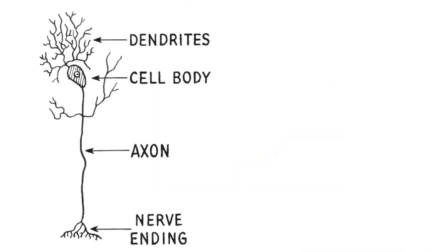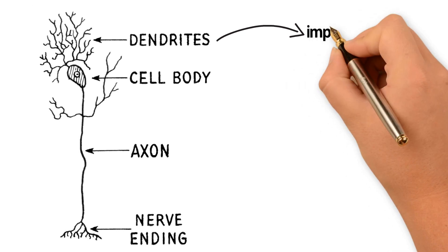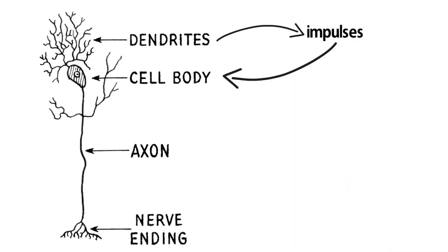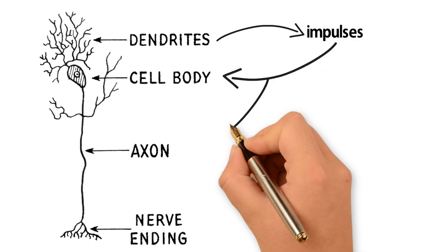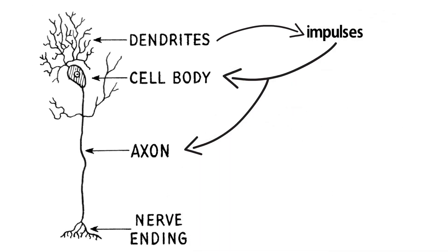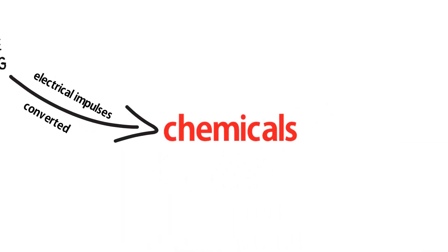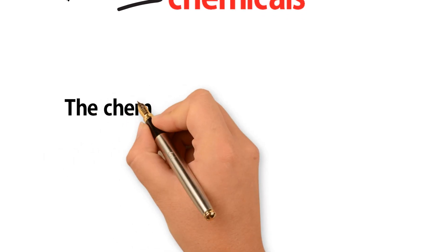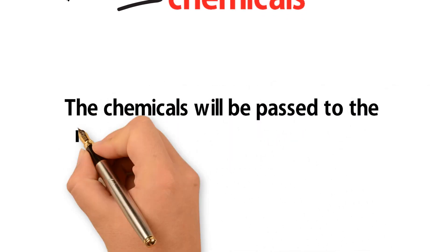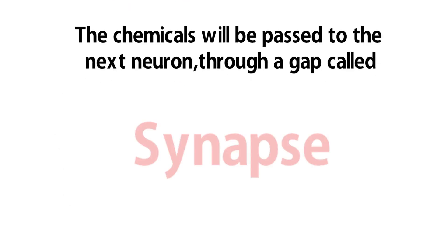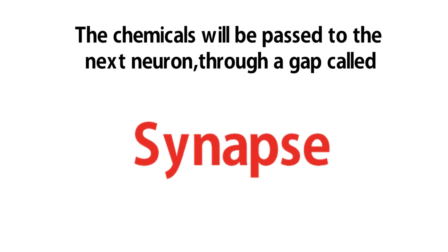The information detected by dendrites is converted into impulses and passed on to the cell body. The axon collects these impulses. At the nerve ending, electrical impulses are converted into chemicals and released. These chemicals are passed to the next neuron through a gap called a synapse. This is how one neuron transfers messages to another neuron.